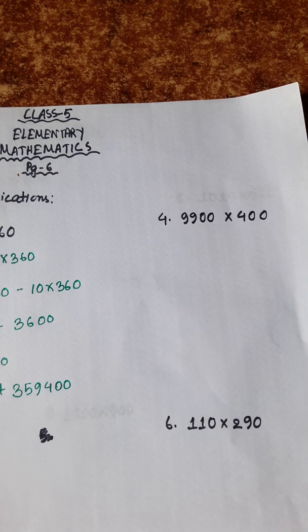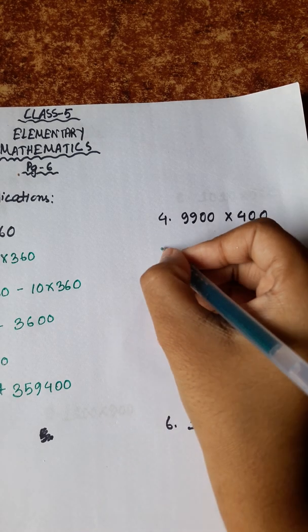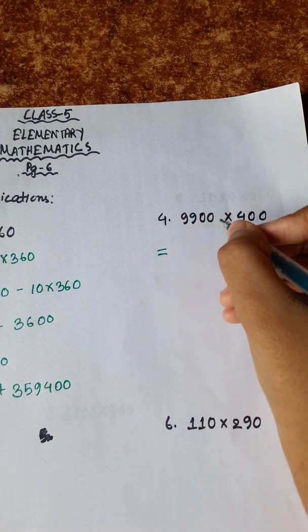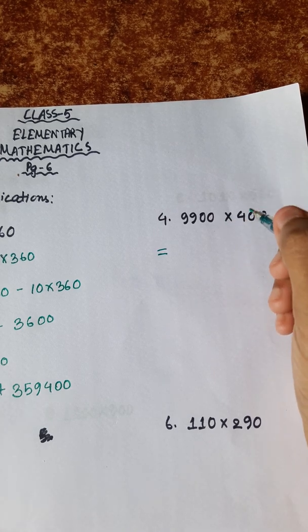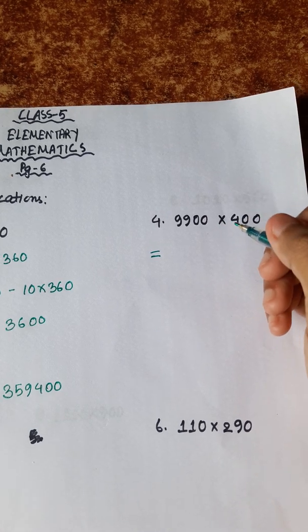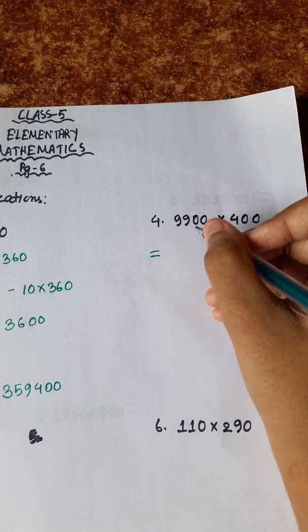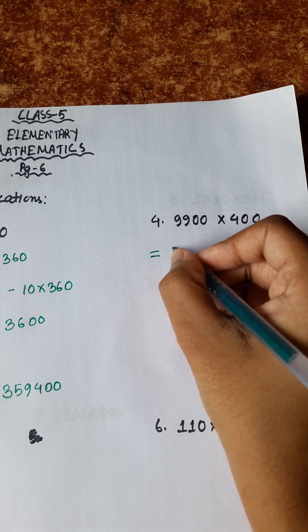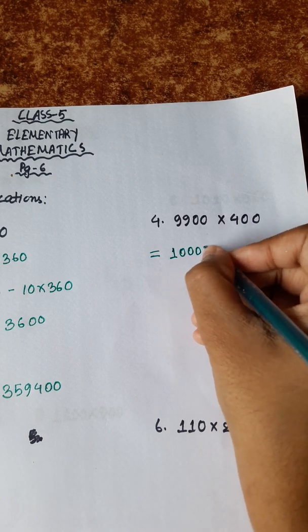Now, number 4: 9,900 into 400. We will add 10,000 to make the conversion. 9,900 becomes 10,000 minus 100. So, 10,000 plus 100 minus.